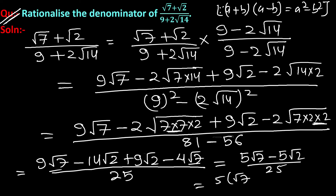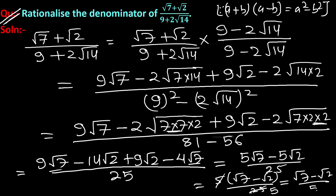So the result is (√7 - √2) / 25, which equals (√7 - √2) / 5. So this is the required answer.